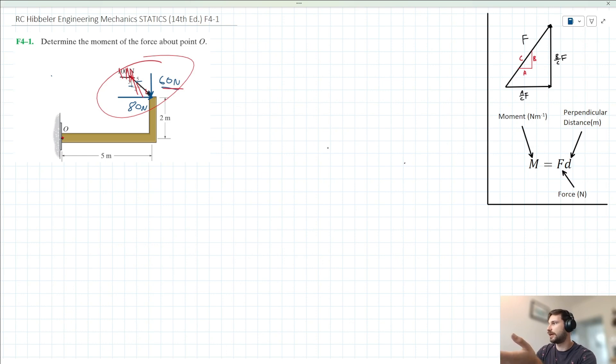Let's go ahead and take moments then. If you're unaware already, a moment is nothing but the product of the force and the perpendicular distance from the point about which you're taking moments. So, we can say the sum of moments acting about point O acting clockwise is equal to, in this case, 60 times 5 plus 80 times 2.